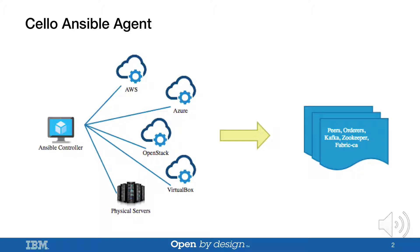Cello Ansible Agent was added to Project Cello six months ago. It was developed as an independent Fabric deployment tool. Later on, it was adopted by the Cello project. Ansible Agent now is part of the Hyperledger Cello project. Ansible Agent uses Ansible to create virtual machines in various clouds, then install, deploy, and configure needed software onto those target machines.